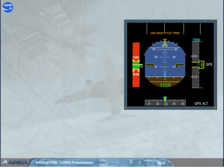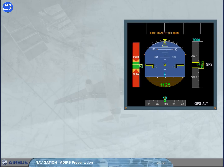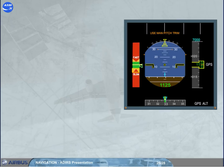The backup speed scale behaves like a normal speed scale — high speeds fast towards the top, and low speeds slow towards the bottom. Two different images can be displayed: one for clean configuration, and another for high lift configuration. The scale is divided into five colored ranges: a red upper area above VMAX with decreased load margin; an amber and red upper area between VMAX with decreased load margin and VMAX with normal load margin; a green area in accordance with the normal speed range between VLS and VMAX; an amber and red lower area between VLS and V stall warning; and a red lower area indicating the stall speed area.